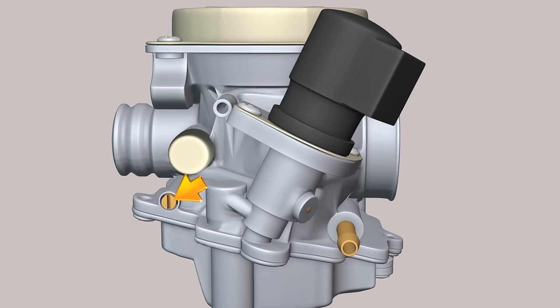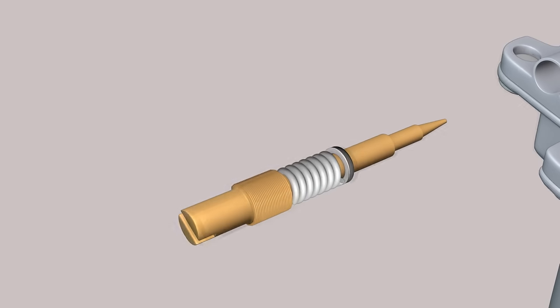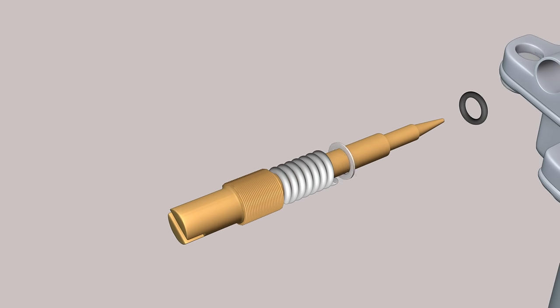Adjustment screw of idle fuel mixture quantity. By default, the screw is unscrewed from the stop by two and a half turns. Under the screw there is a spring, a metal washer and a rubber sealing ring.